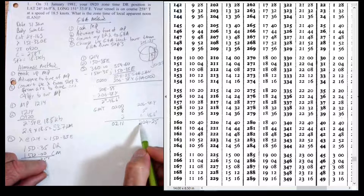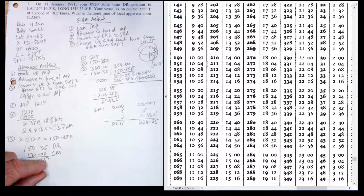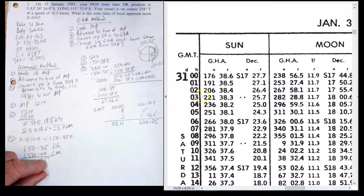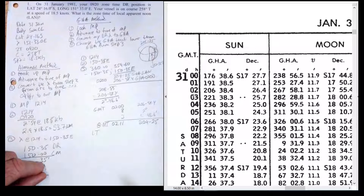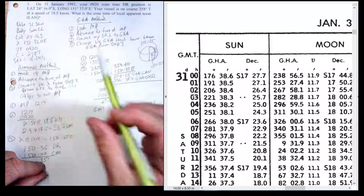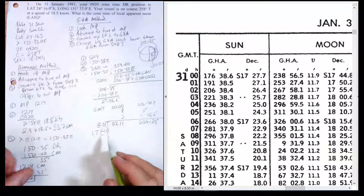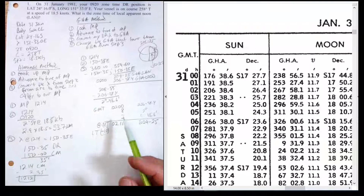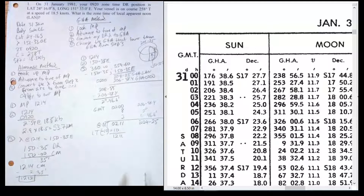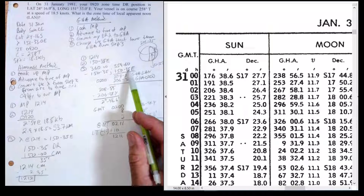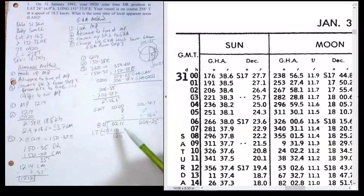One last step: 0211 is GMT time, so I need to convert to local time. Our zone description for 151° East is minus 10 (to go local to GMT). Going GMT to local I reverse it: plus 10 hours. Adding 10 to 0211 gives 1211, so at 1211 local time the sun's GHA will be 209°25', corresponding to 150°35' East — that's meridian transit, our LAN time.